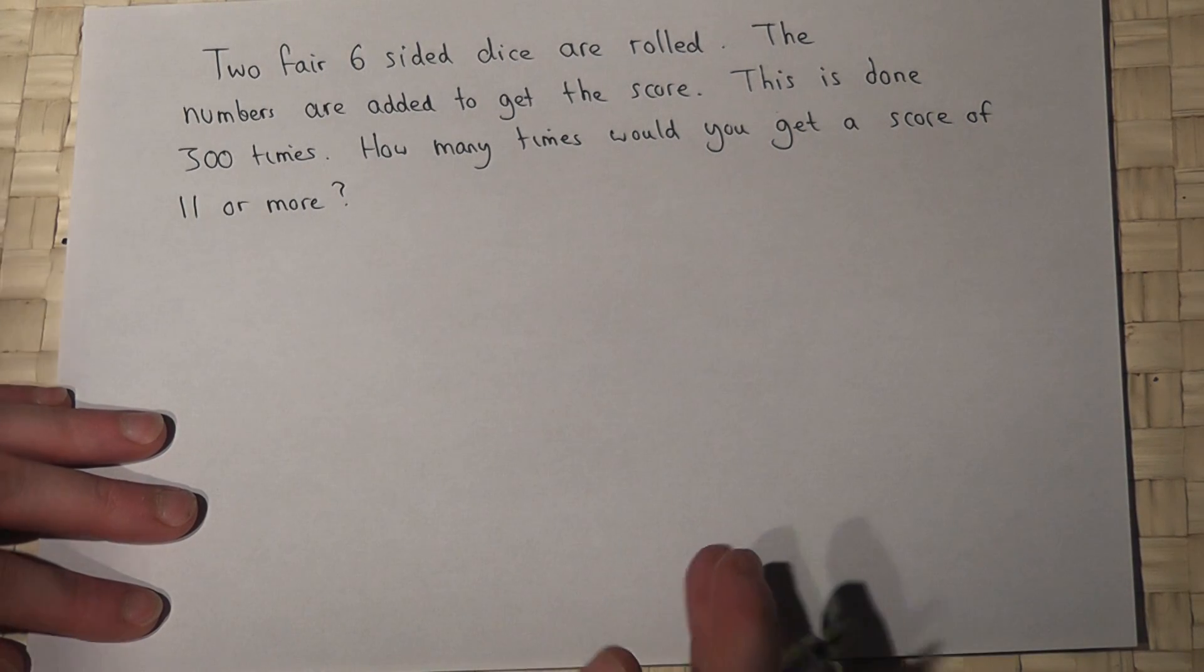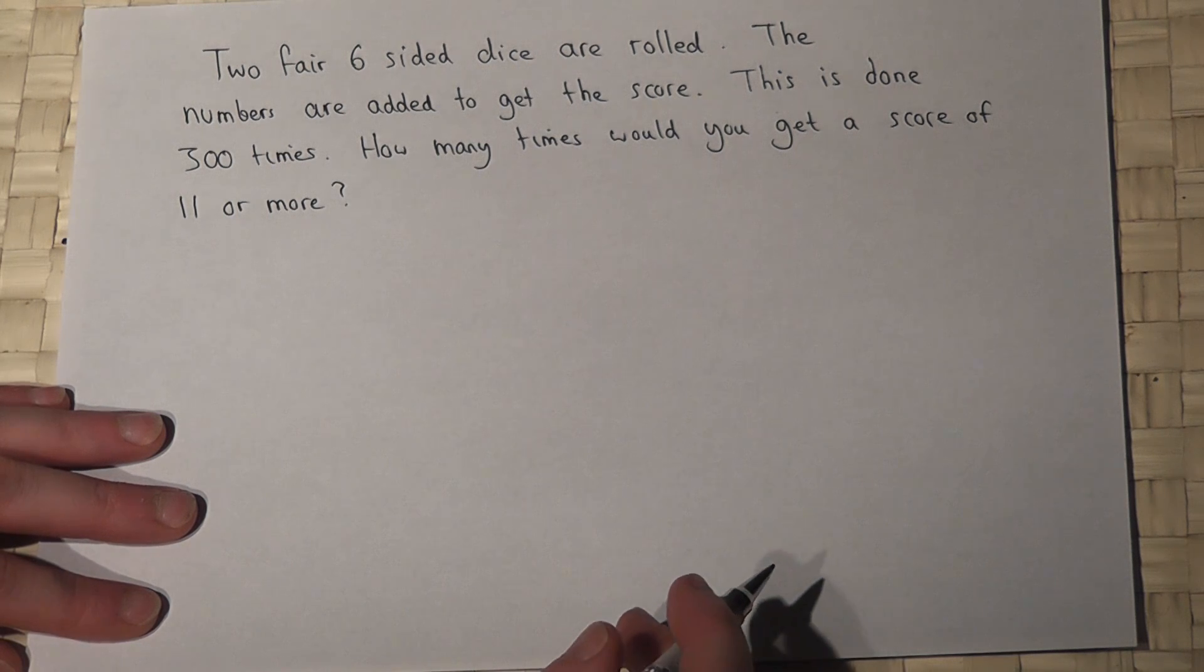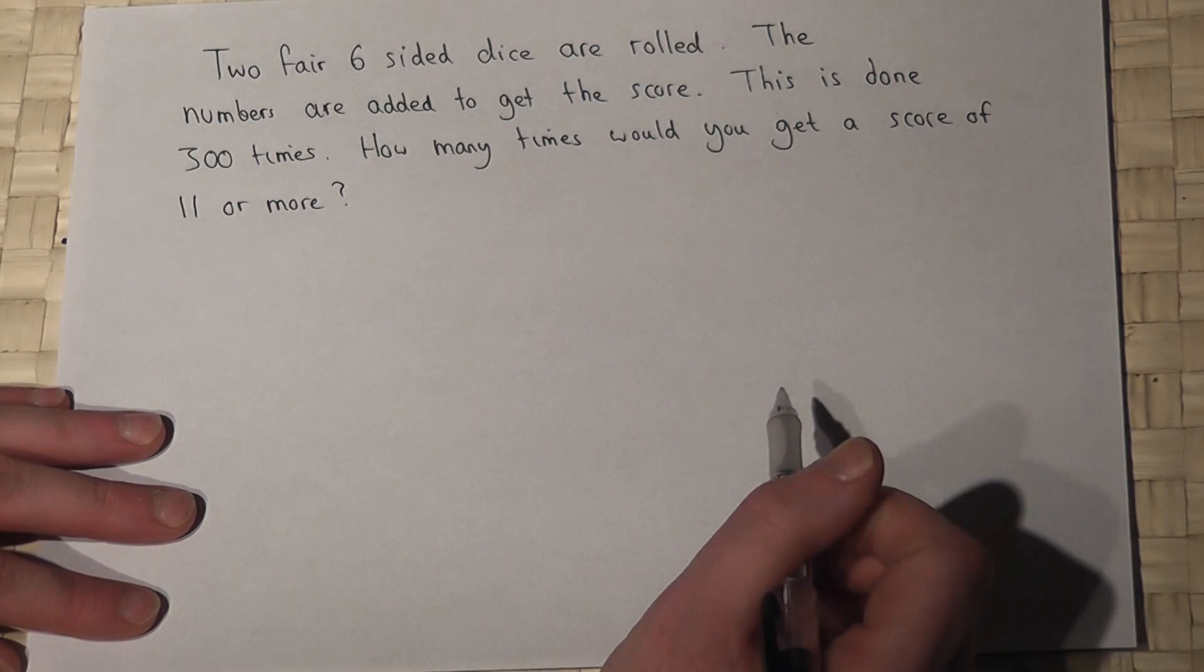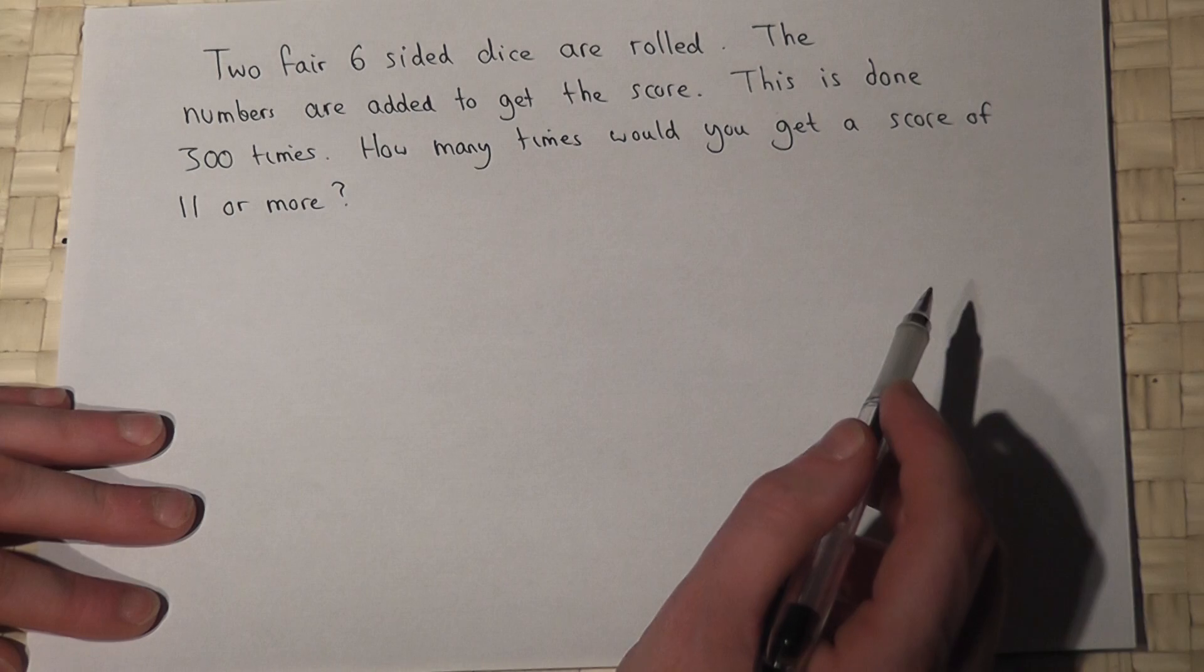This video reviews a problem in which we roll two fair six-sided dice and we do this 300 times, and the question is how many times do you expect to get a score of 11 or more?